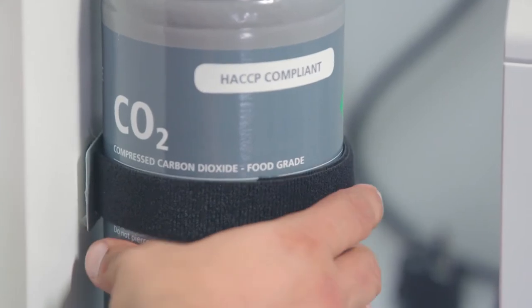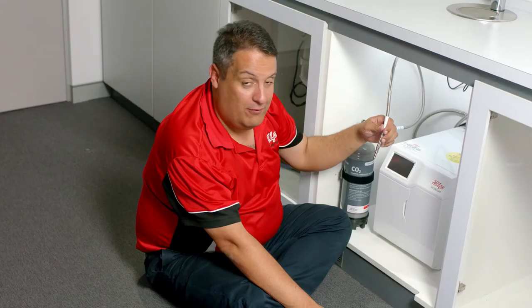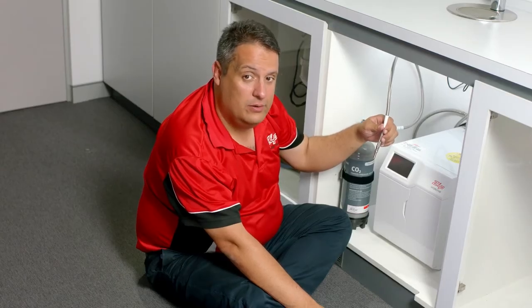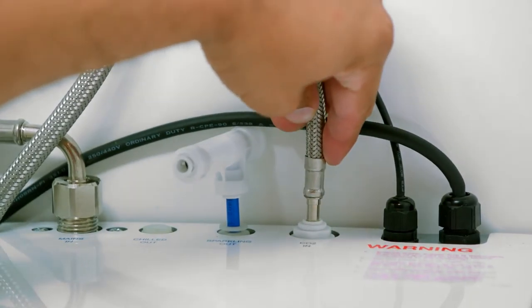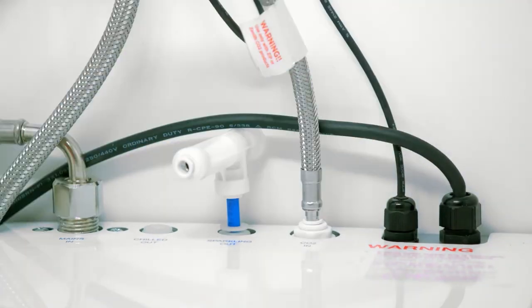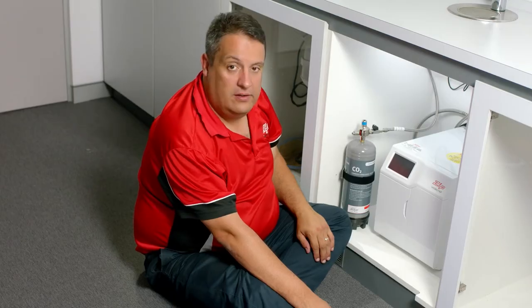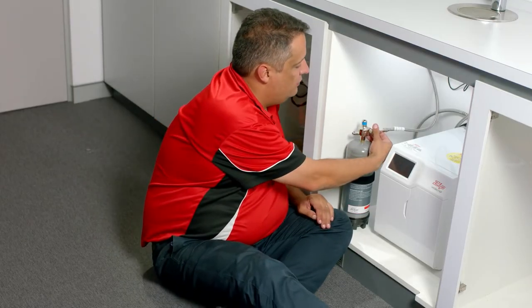Secure it with a Phillips head screw supplied in the box. The final connection of your CO2 is to fit the male end of the gas hose into the CO2 in on the command center. Once connected, you can turn the CO2 gas on.